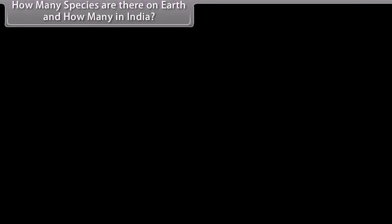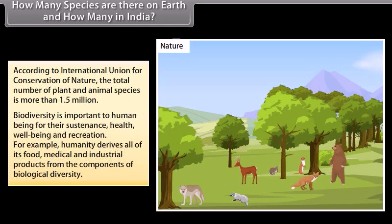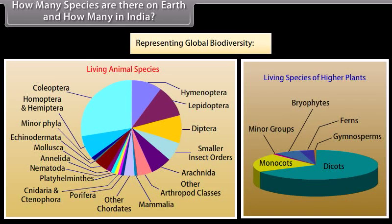How many species are there on earth and how many in India? According to the International Union for Conservation of Nature, the total number of plant and animal species is more than 1.5 million. Biodiversity is important to human beings for their sustenance, health, well-being, and recreation. Humanity derives all of its food, medical, and industrial products from the components of biological diversity. Here is a pie graph representing global biodiversity.